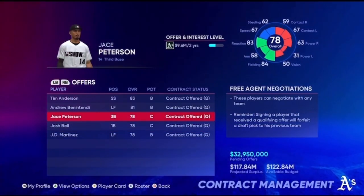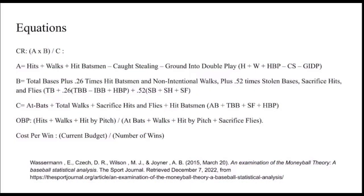Now I'm going to show you how I calculated these things. Here are our equations. We have CR, which is created runs — that's A times B divided by C. A is hits plus walks plus hit batsmen minus caught stealing minus grounded into double play. B is total bases plus the constant .26 times hit batsmen and non-intentional walks plus the constant .52 times stolen bases, sacrifice hits, and flies. C is at-bats plus total walks plus sacrifice hits and flies plus hit batsmen.